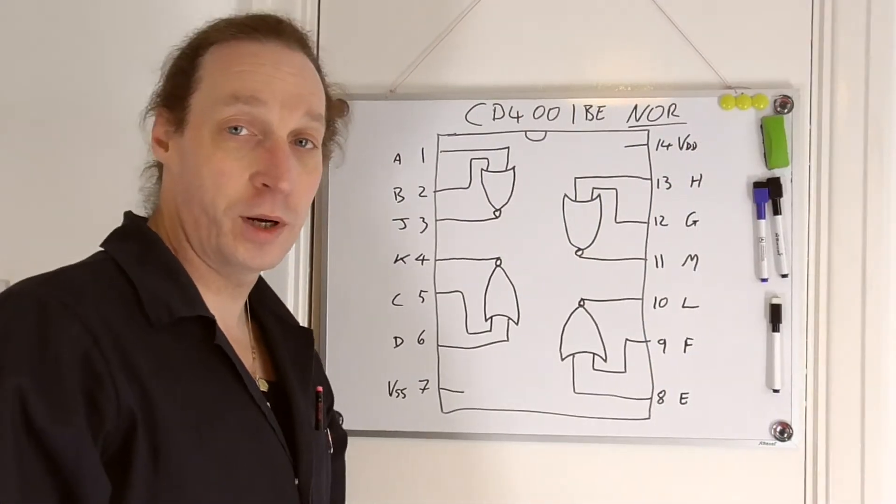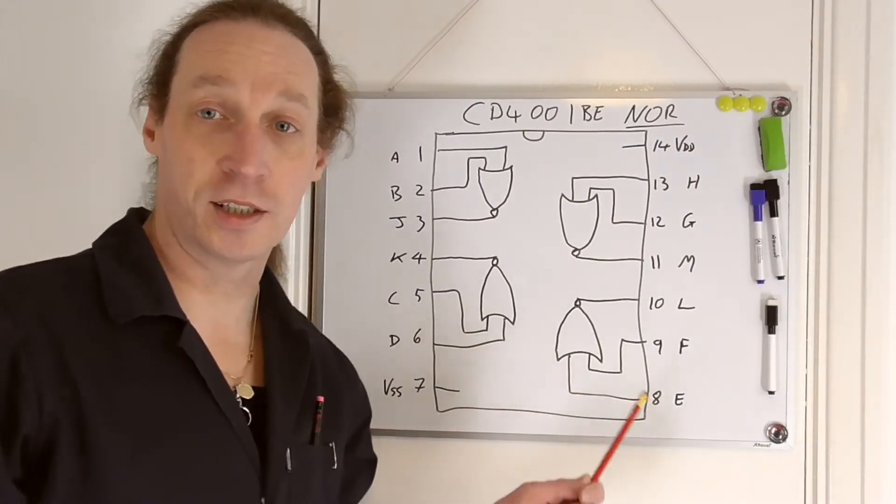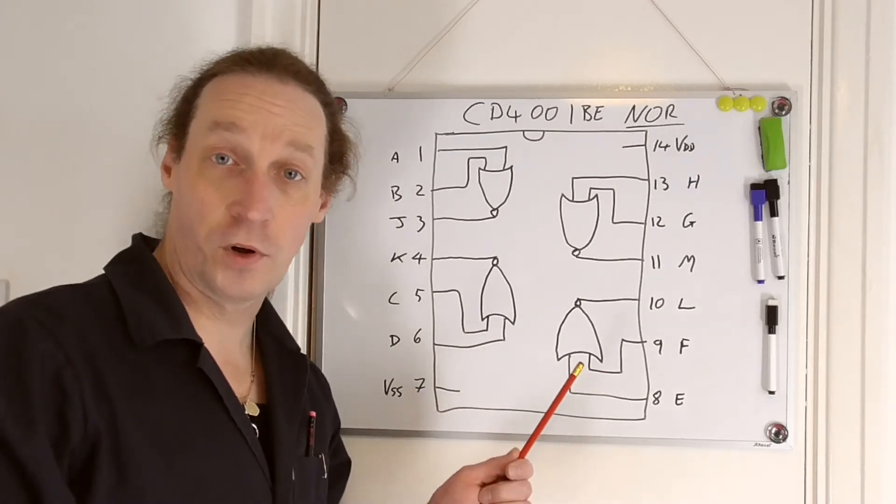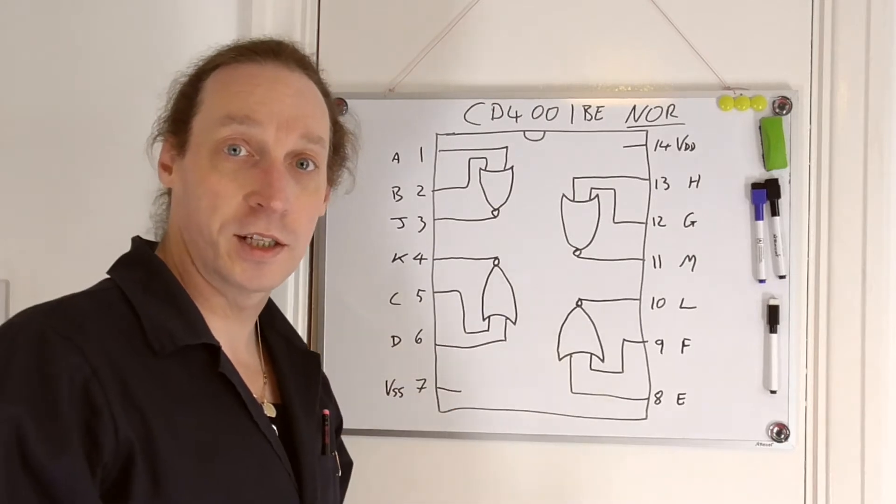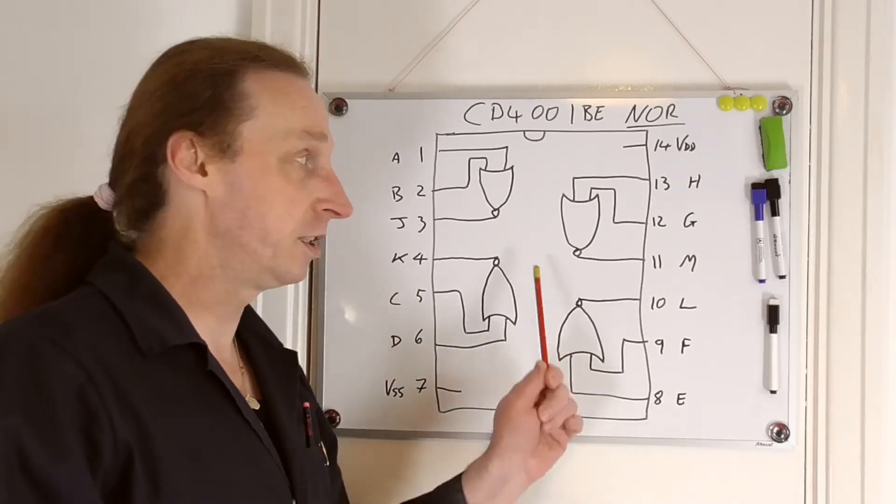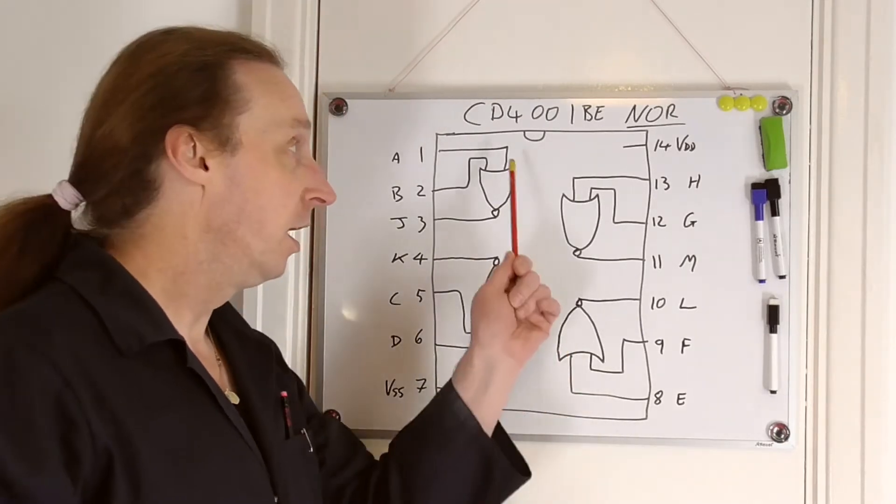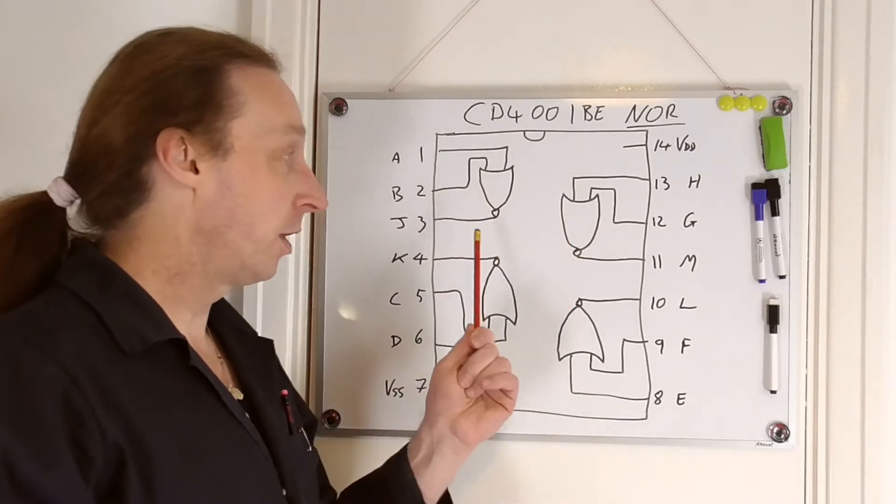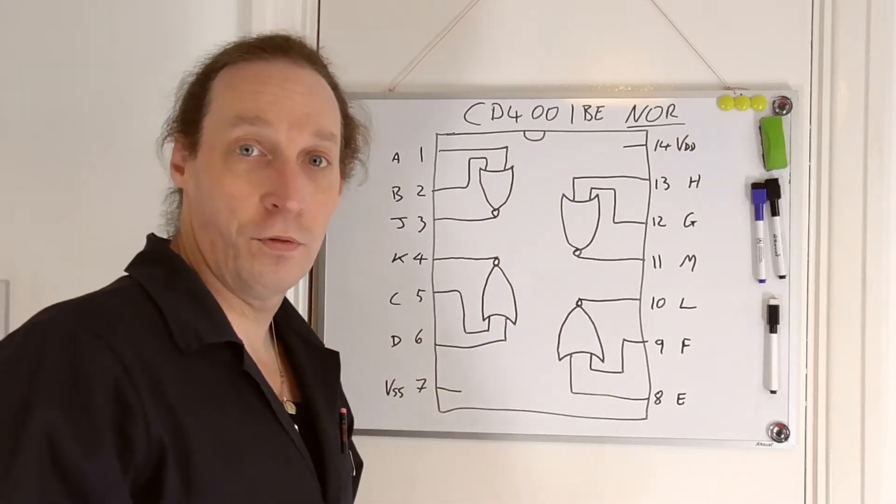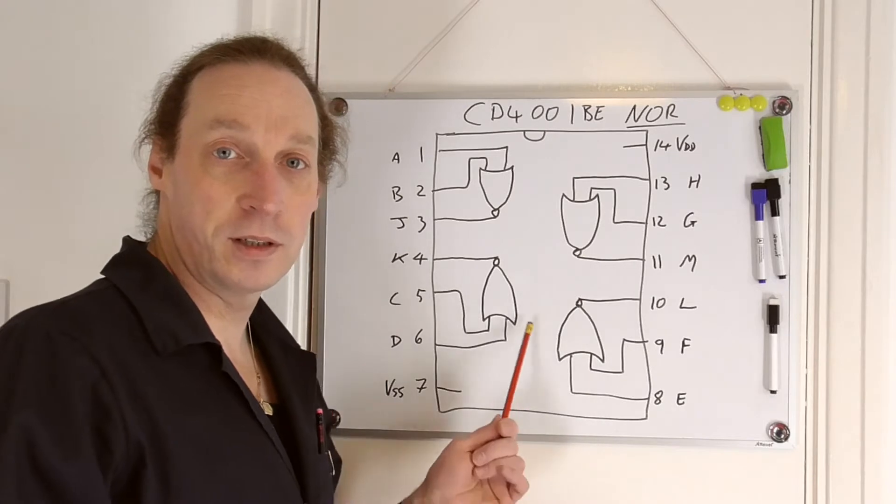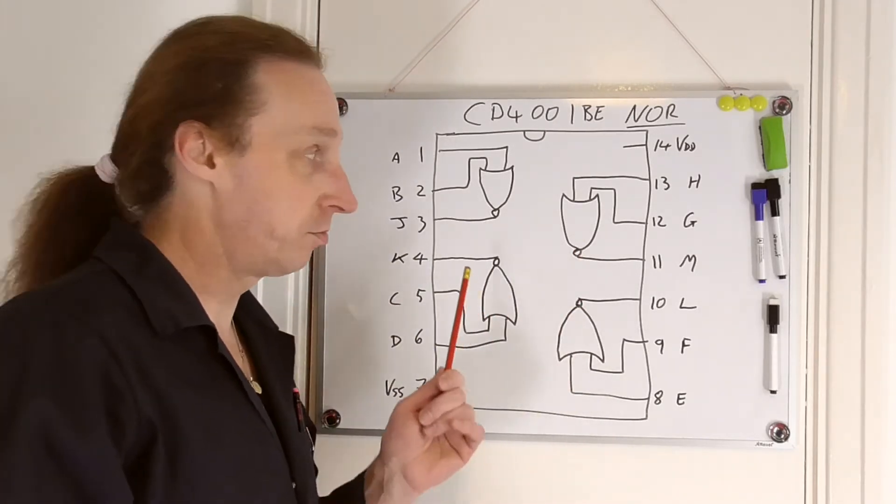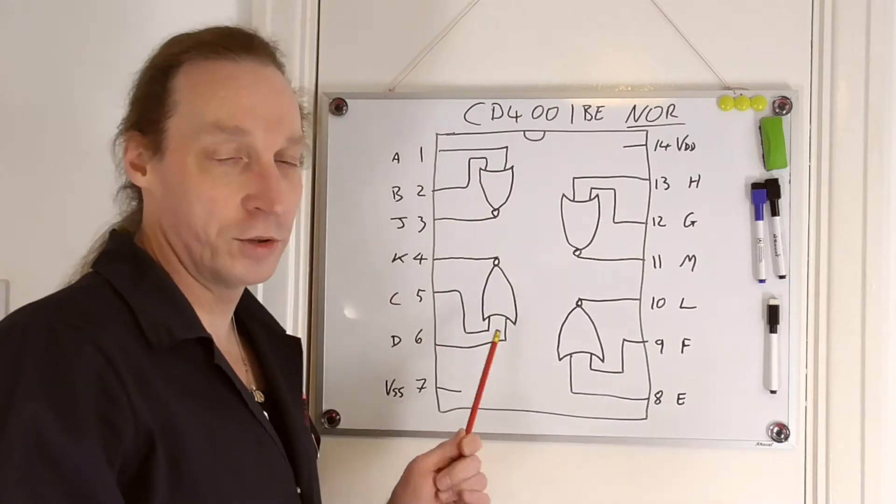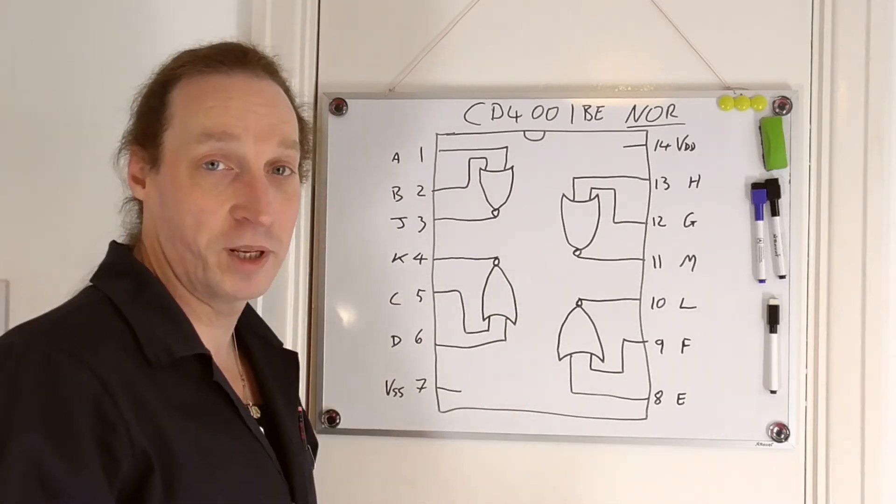Okay, so a quick diagram of the actual IC itself. Very simple, follows fairly conventional layout when it comes to these logic ICs. CD4001 has four of these NOR gates in there. It's a two input quad NOR gate, so that's what it is. Four of them in the package.